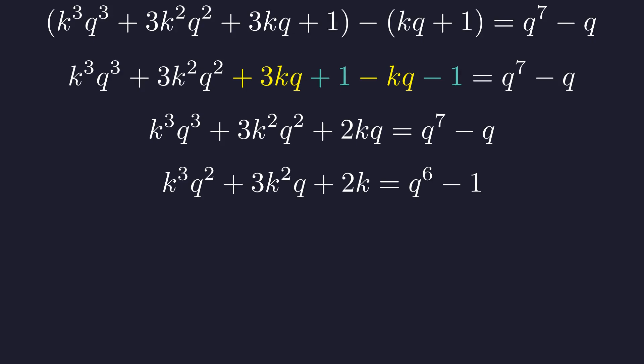The simplified expression is shown here. We observe that every term in the equation is divisible by q. Dividing the entire equation by q yields this polynomial in k and q.